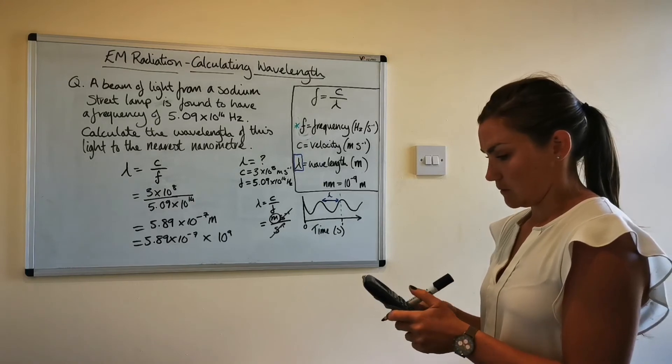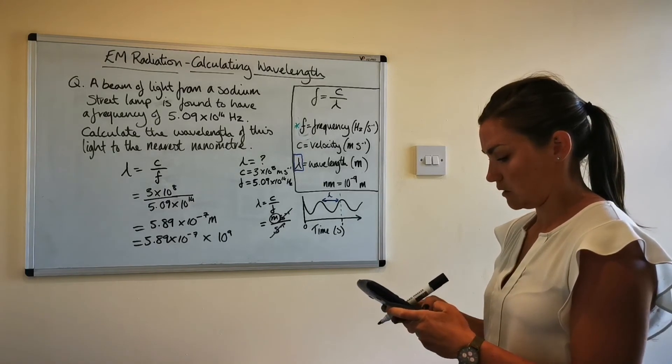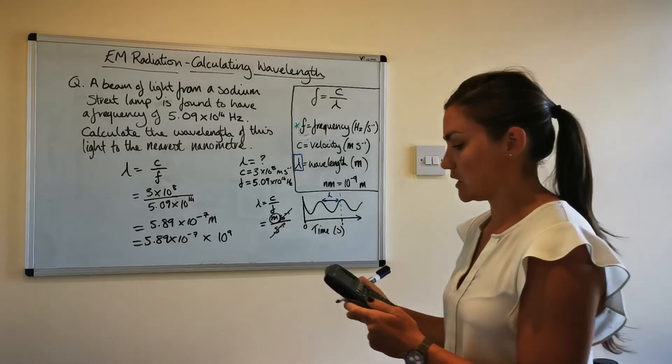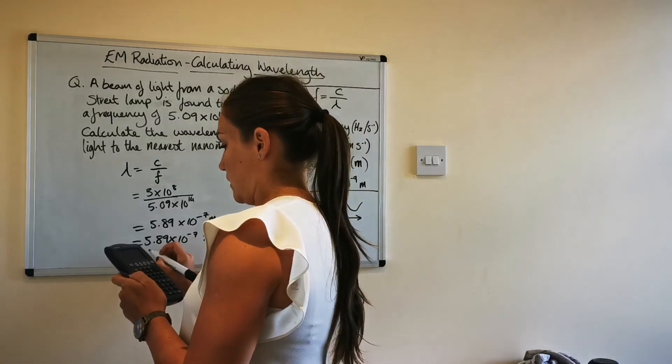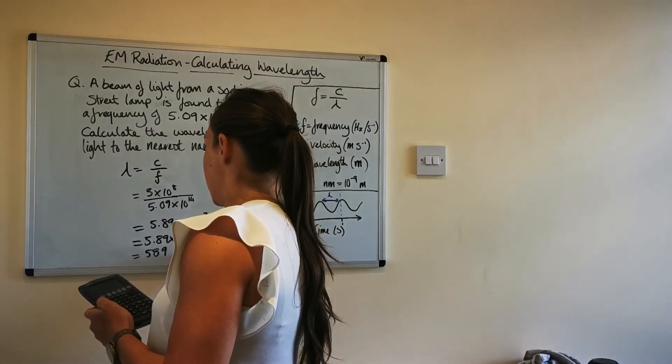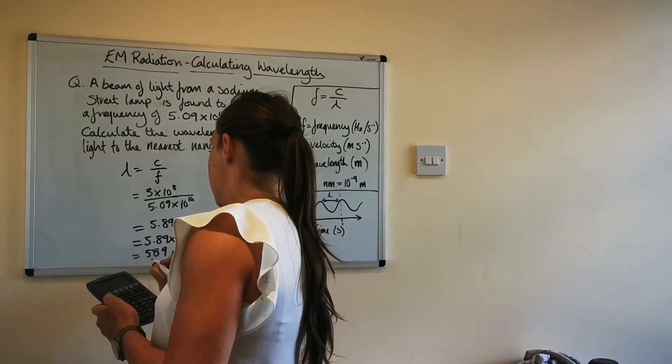So put that in my calculator then it comes out as five eight nine. So 589 and then now that is nanometers.